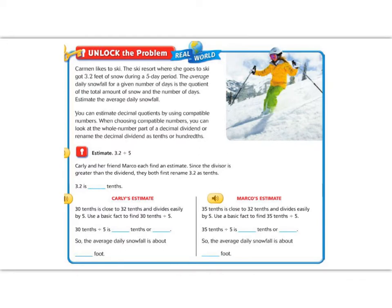All right, fifth graders, let's begin by reading the Unlock the Problem. It says Carmen likes to ski. The ski resort where she goes to ski got 3.2 feet of snow during a five-day period. The average daily snowfall for a given number of days is the quotient of the total snow over the number of days.